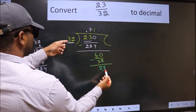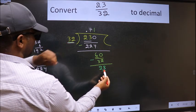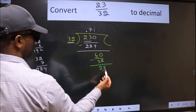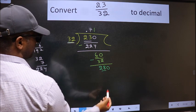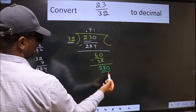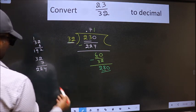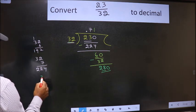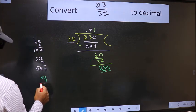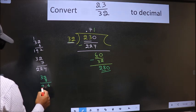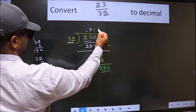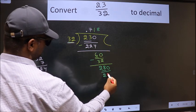Now 28, 32. 28 is smaller than 32. We already have the decimal, so directly take 0. So 280. A number close to 280 in 32 table... Let us check with 8: 8×2 is 16, 8×3 is 24, which is 256. So 32×8 is 256.